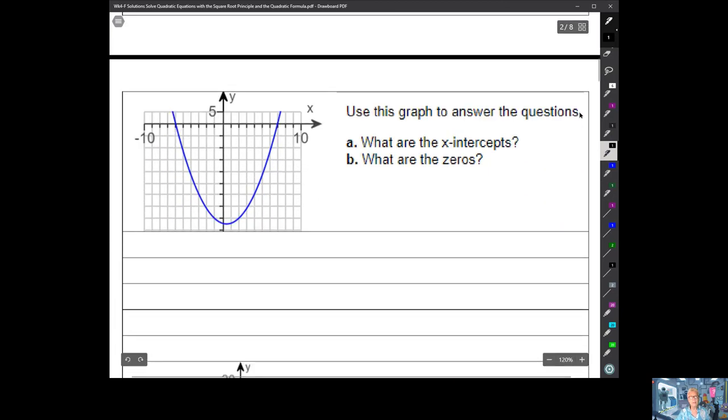Now let's talk about something that's very close to what we talked about before when we were solving quadratic equations the first time. Now there's a little bit of a difference. Use this graph to answer the questions. What are the x-intercepts? Let's see. That'll be negative 1, negative 2, negative 3, negative 4, negative 5, negative 6.